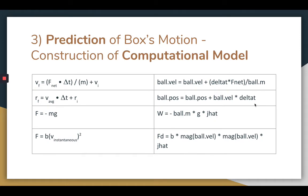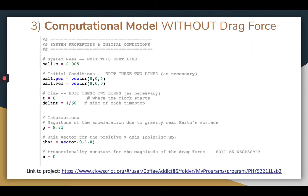For the computational model, I used the starter code and wrote the equations I mentioned earlier in Python as seen here. Here's an excerpt of the code from my first computational model, the one without drag force. The box is initially at rest, so both the position and velocity vectors are set to 0, 0, 0. I filmed my video at 60 frames per second, so I set delta t to 1 over 60 such that each time increment is equal to 1 frame. And finally, since the drag force formula is not being applied in this model, I set the proportionality constant b to 0.